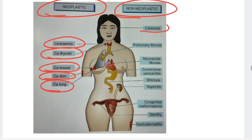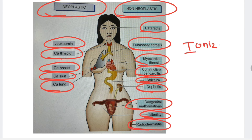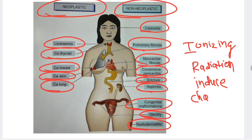Neoplastic cancers caused by ionizing radiation include leukemia, thyroid cancer, breast cancer, skin cancer, and lung cancer. Non-neoplastic disorders include cataract, fibrosis, myocardial fibrosis, constrictive pericarditis, stricture, kidney infection, sterility, and radiodermatitis. Both neoplastic and non-neoplastic disorders can occur due to ionizing radiation exposure.